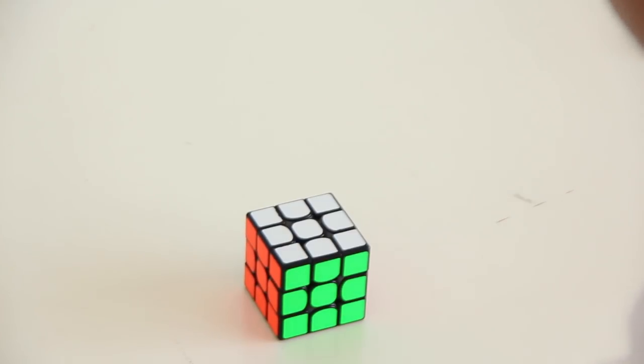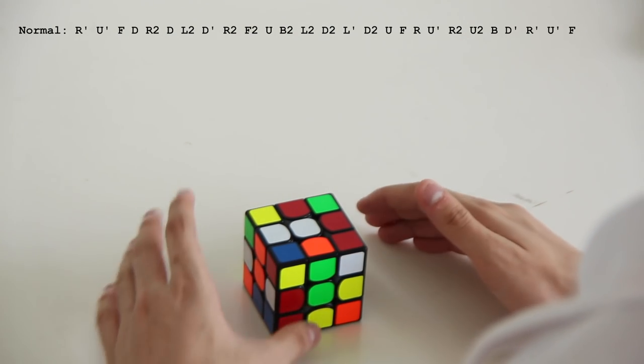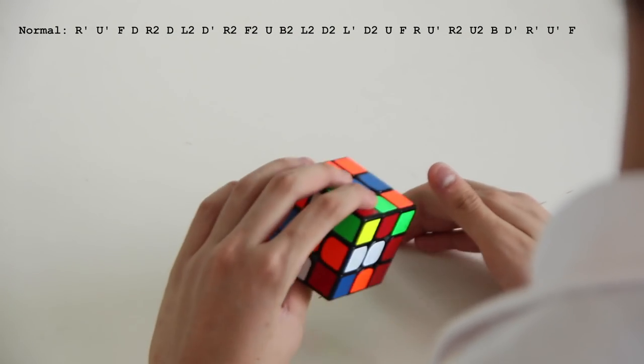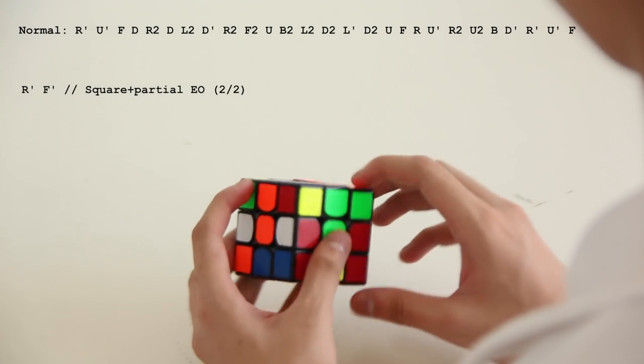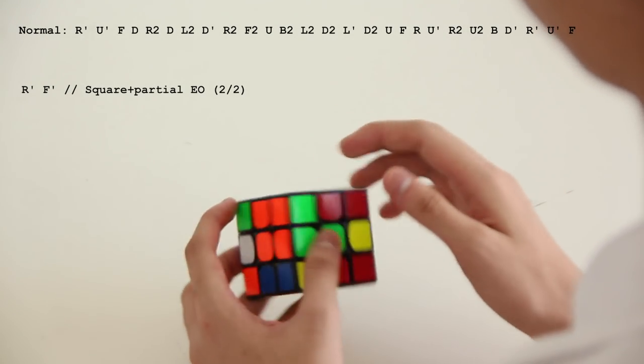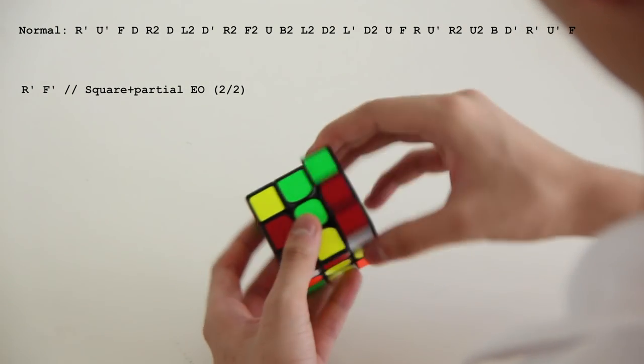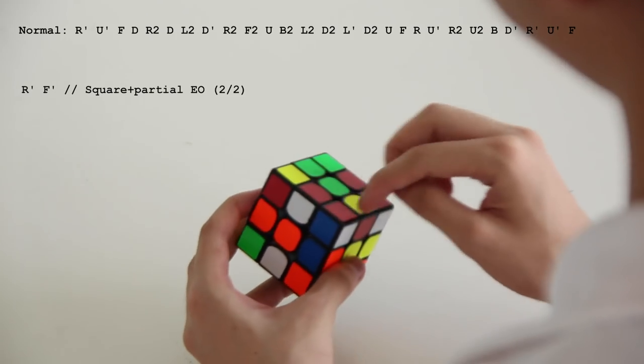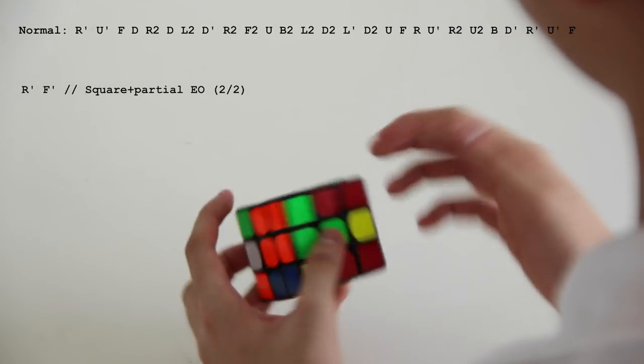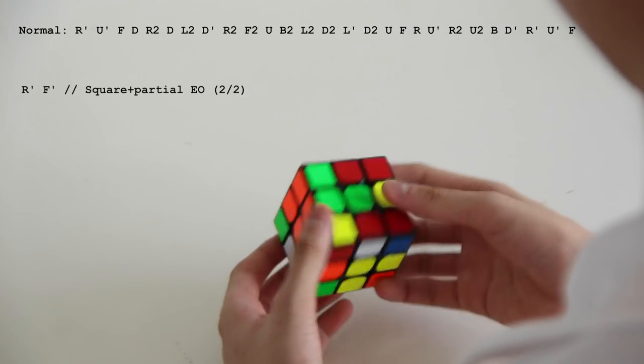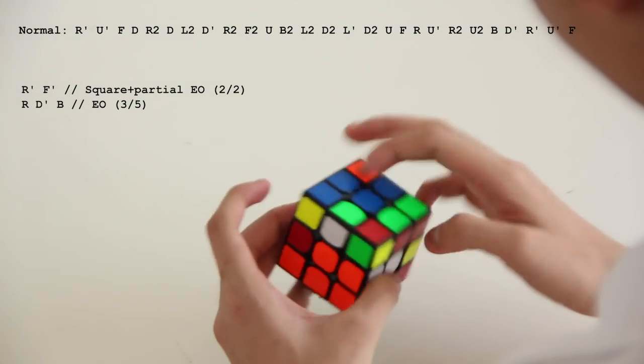Now, time to go to the second scramble. So on the second scramble, my entire skeleton was done on the normal, and it's a really short skeleton. So first I saw that I could do R', F' to make the square, but that also reduces the EO to 4 edges left, because by doing an R', these are all 4 bad edges, and there are 8 bad edges in total, so that makes a square and partial EO. And to finish the EO, I did R, D', B.